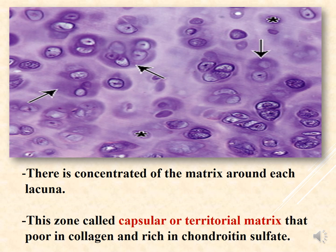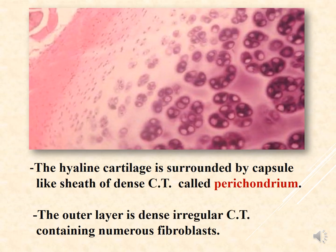Around each lacuna there is a concentrated region of matrix called the capsular or territorial matrix, which is poor in collagen and rich in chondroitin sulfate. Hyaline cartilage is surrounded by a sheath of dense connective tissue called the perichondrium.